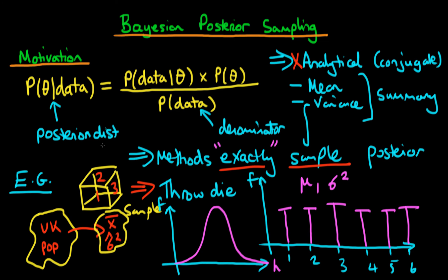If we can exactly sample from the posterior distribution, then we can make inferences about what the posterior mean value of theta is and what the posterior variance of theta is. In theory, if we know sufficient summaries of our data, that should be sufficient to go ahead and do Bayesian inference and prediction. To summarise: sampling from the posterior distribution, if we can do it exactly, provides quite a nice window into describing what the posterior distribution actually looks like. Although the method doesn't exactly tell us the form of the posterior distribution, the window might be sufficiently large that we gain enough information to do Bayesian inference and prediction.